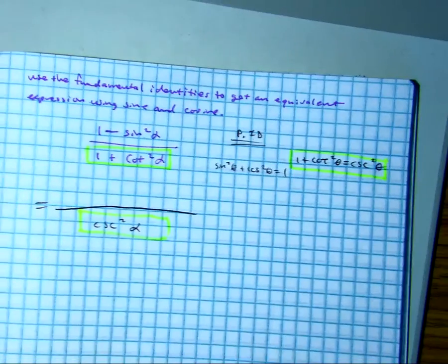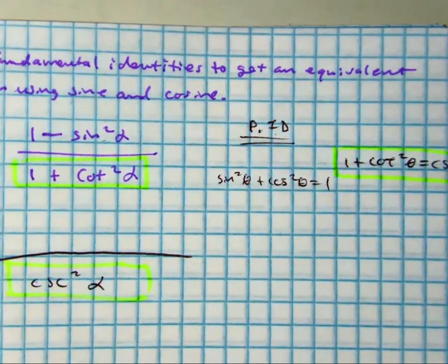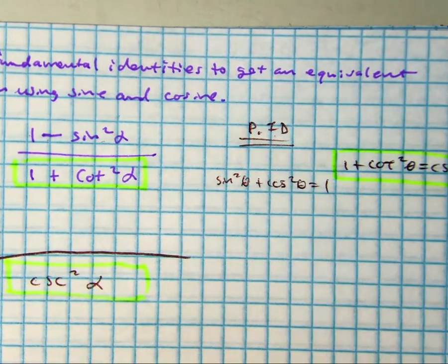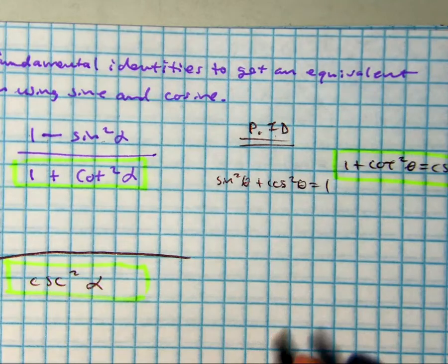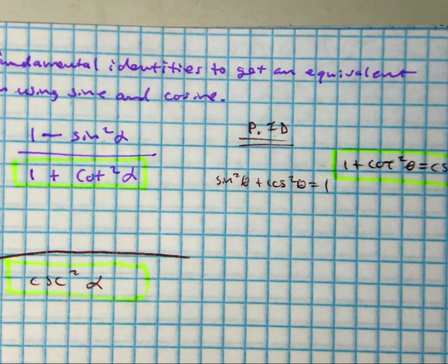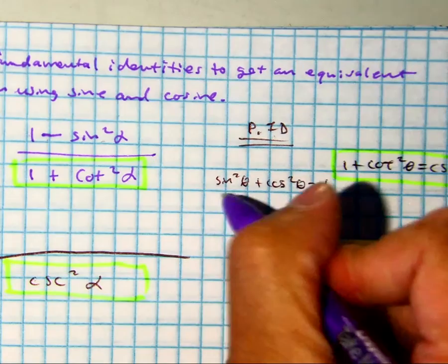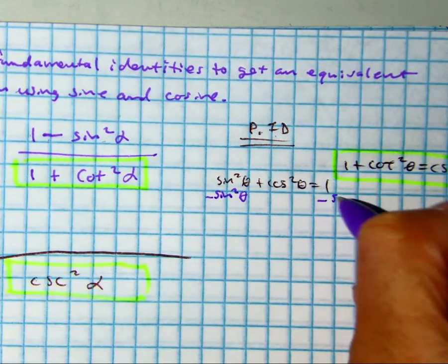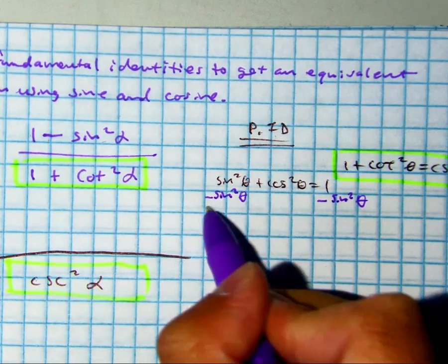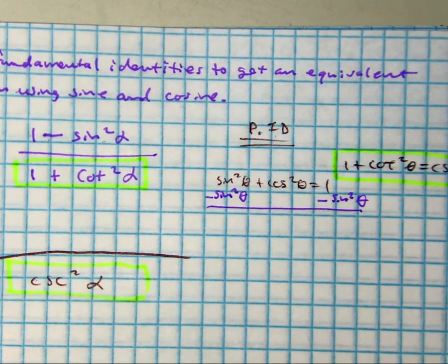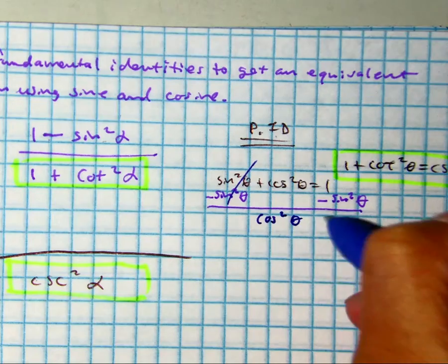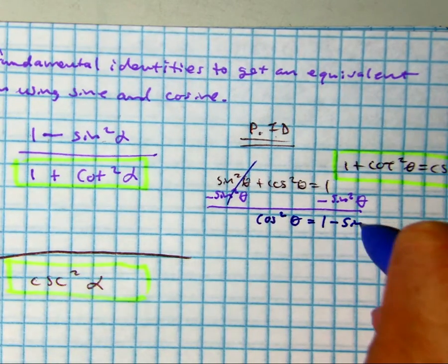Now, if you look at this identity, it says 1 minus sine squared. Class, how can I match that over here? What would I have to do? We would have to subtract sine squared. That means we would get cosine squared of an angle equals 1 minus sine squared of an angle.